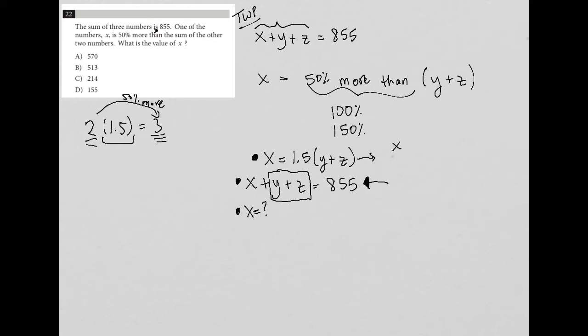I'm going to take the equation x equals 1.5 times (y plus z) and solve for y plus z. Dividing both sides by 1.5, I get y plus z equals x divided by 1.5.